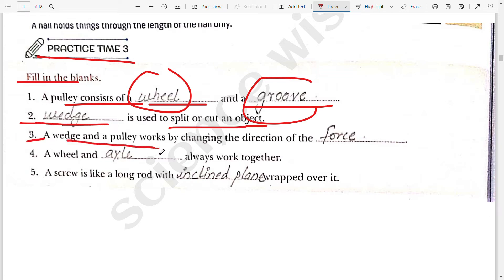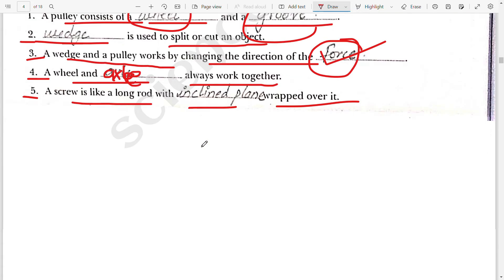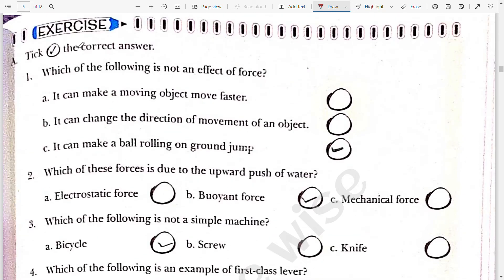Third, a wedge and a pulley works by changing the direction of force. Fourth, a wheel and an axle always work together. A wheel and axle always work together. Fifth, a screw is like a long rod with inclined plane wrapped over it. Now let's move to the exercise.